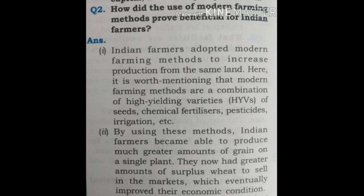Question 2: How did the use of modern farming methods prove beneficial for Indian farmers? Indian farmers adopted modern farming methods to increase production from the same land. Modern farming methods are a combination of high yielding varieties of seeds, chemical fertilizers, pesticides, irrigation, etc. By using these methods, Indian farmers became able to produce much greater amounts of grain on a single plant. They now had greater amounts of surplus wheat to sell in the markets, which eventually improved their economic conditions.